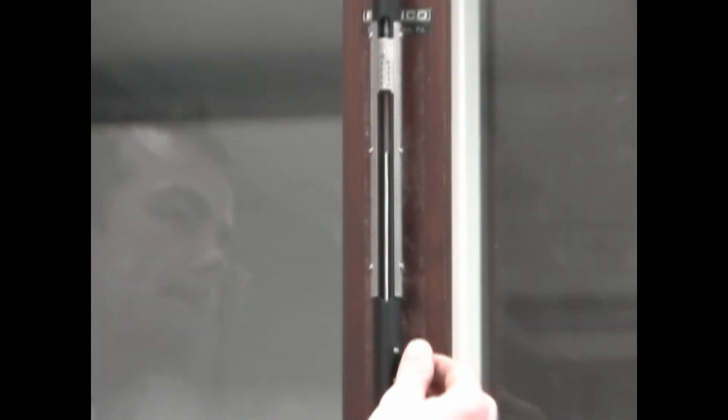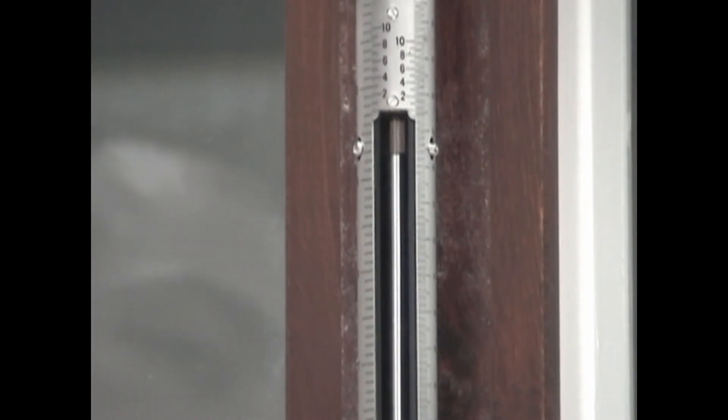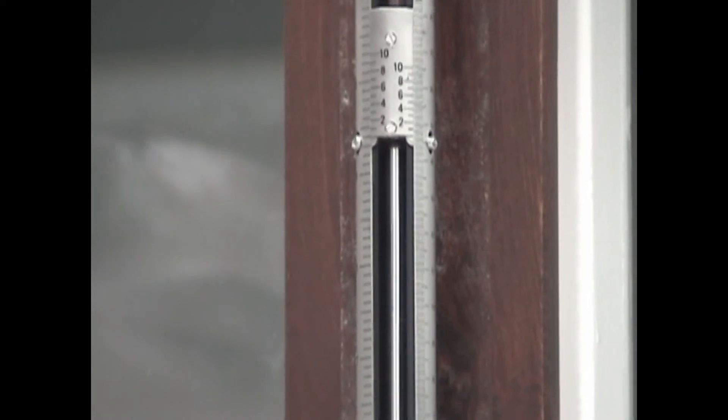Locate the dial for the sliding vernier on the right side of the barometer. Turn the dial so that the bottom of the sliding vernier lines up with the column of mercury.